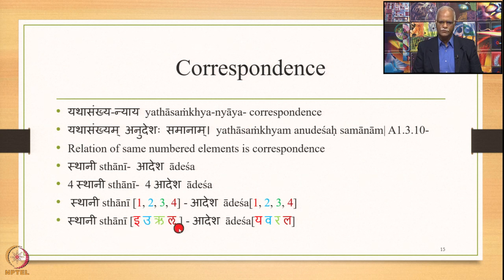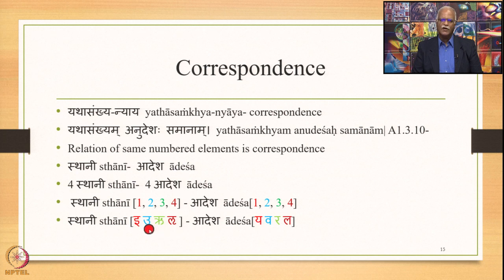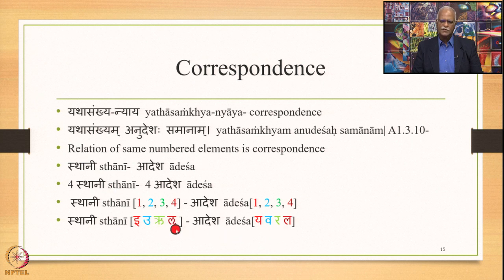In this case E, U, Ru and Lu are the Sthanis, and Y, V, R, L are stated as Adeshas. So E is the Sthani corresponding with Y as the substitute — these letters stand for just the consonants Y, V, R and L. E corresponds with Y, U corresponds with V, Ru corresponds with R, and Lu corresponds with L as the substitute.